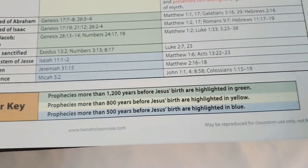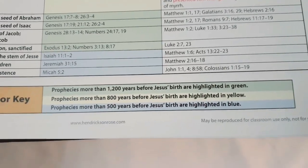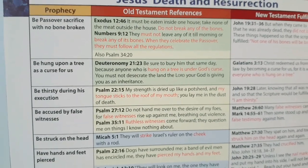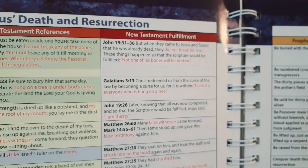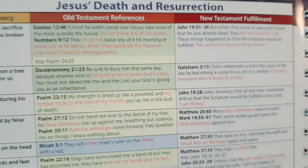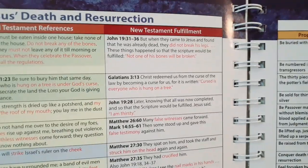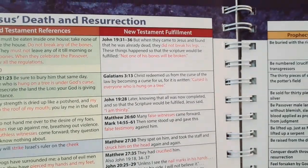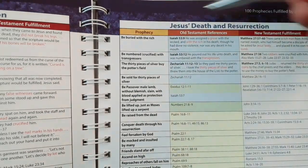There's a color key — prophecies made more than 1,200 years before Jesus' birth are highlighted in green, yellow, and blue. The next page deals with prophecies about the death and resurrection of the Lord Jesus Christ — for example, being a Passover sacrifice with no bone broken, from Exodus and Numbers, and being hung upon a tree as a curse for us, from Deuteronomy, confirmed in Galatians. The birth, death, and resurrection — a hundred prophecies fulfilled.